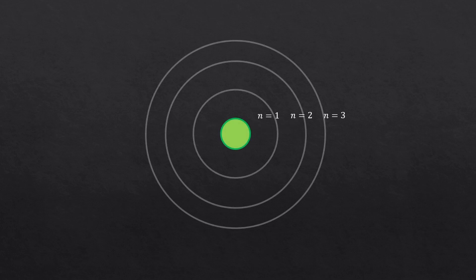It all starts from here. We have an atom. So there's a nucleus at the center, colored in green, and an electron is orbiting around it.